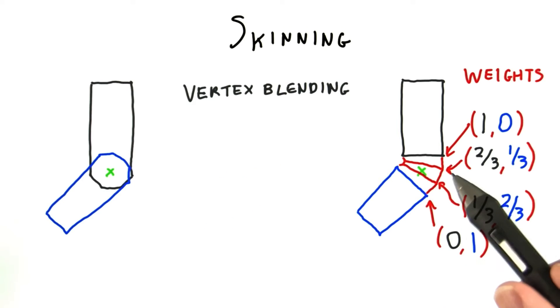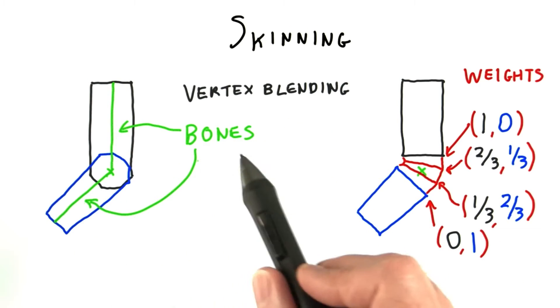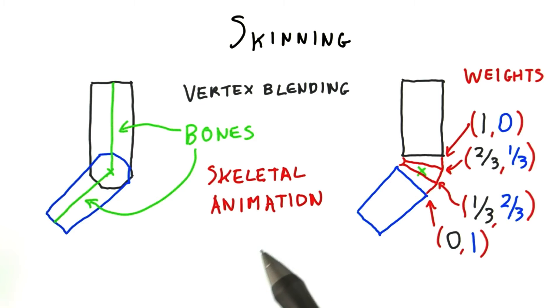This modeling process of adding polygons and assigning weights is called skinning, or sometimes vertex blending. The rigid parts of the model are defined by bones. These bones are like a skeleton, so this whole area is sometimes called skeletal animation.